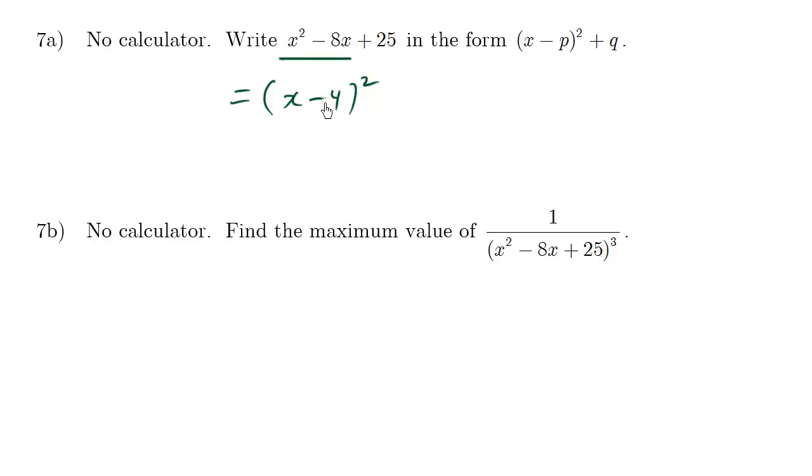However, using the letter L in FOIL, you get last. Negative 4 times negative 4 is positive 16. So this generates 16 too much. So to compensate for this extra 16, I'm going to go minus 16.